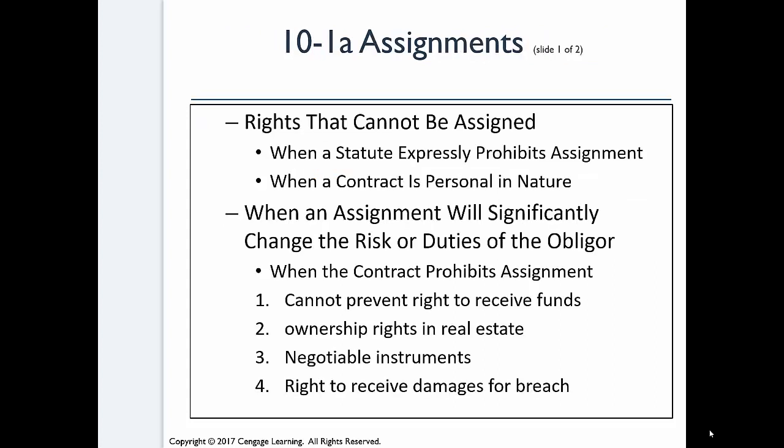Not everything can be assigned. If there is a statute that expressly prohibits assignment of that particular right, it can't be assigned. And if a contract is personal in nature — if you hire a band to play at the family reunion, you hired that band, not that band's cousin — those can't be assigned. Sometimes assignments will significantly change either the risk or the duties of the obligor, that's the person obligated to perform. There's a good graphic in the book involving Alex, Brent, and Carmen that illustrates the different relationships in an assignment.